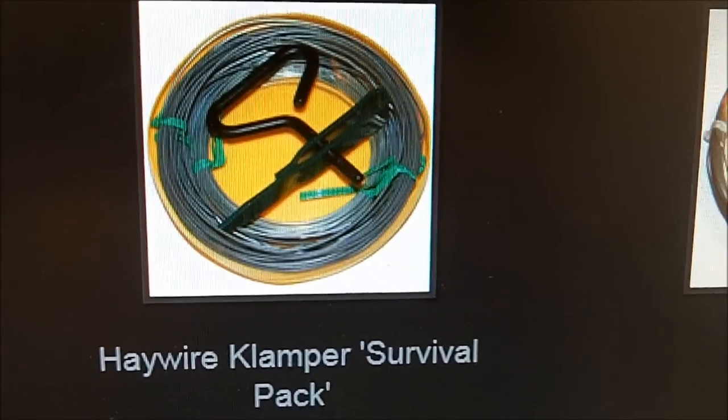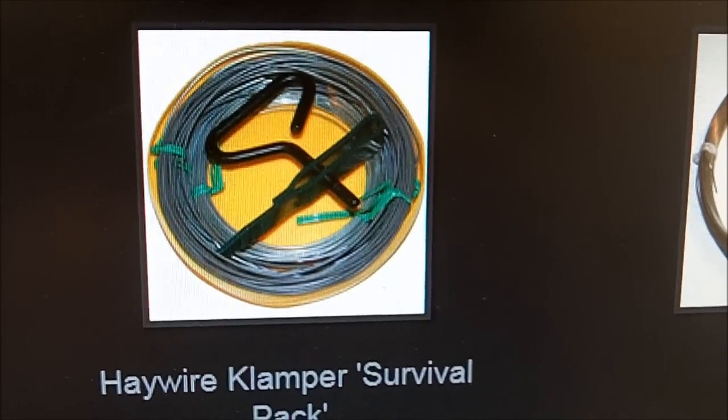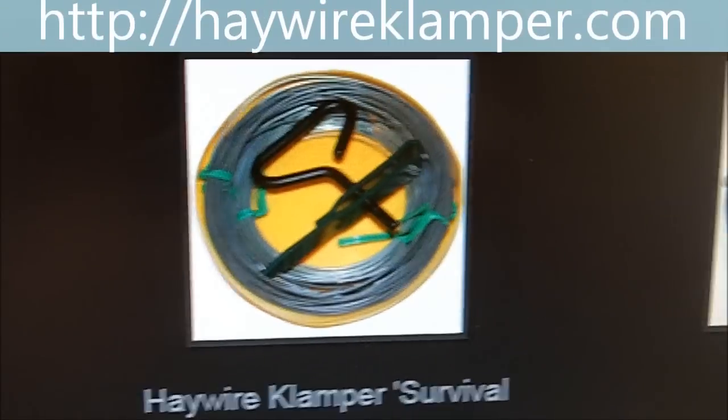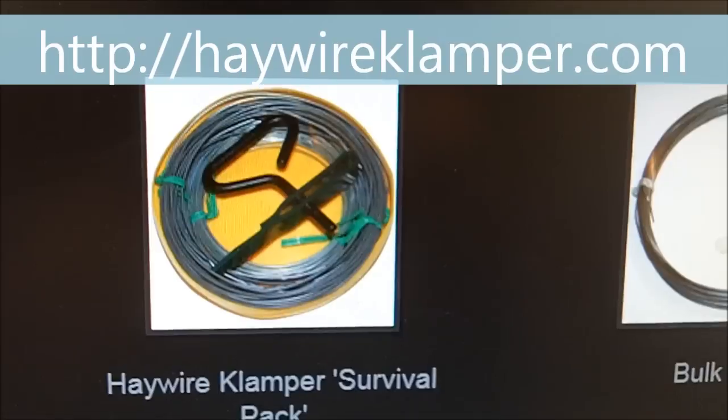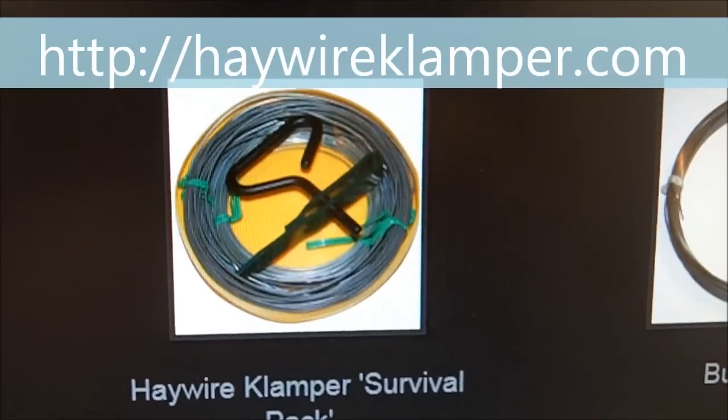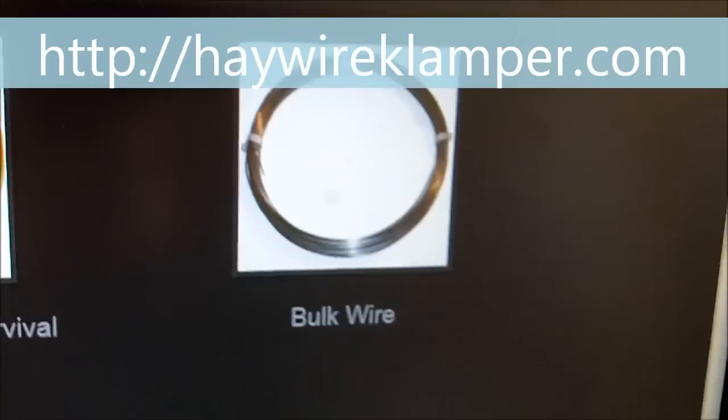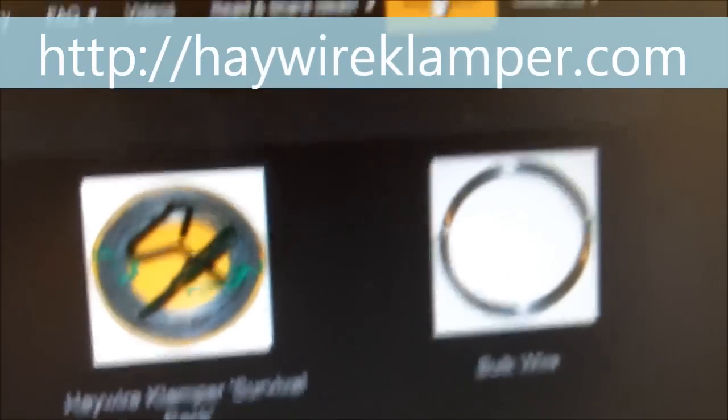And there's the Haywire Clamper survival pack, which sells for just under $45. Same tool, but with the survival pack, you get this very nice case and a lot of wire to use of different gauges, three different gauges in there. And then you can also order bulk wire on the website. But of course, you can get the wire anywhere.